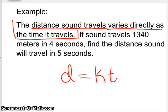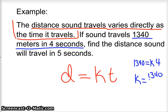Now, once you have the equation, it's possible to solve the rest of the problem. If sound travels 1,340 meters in 4 seconds, we can find our constant of proportionality. Just plug it in. 1,340 equals k times 4 seconds. So k, our constant of proportionality, is 1,340 divided by 4. You divide that to figure out what that number is.